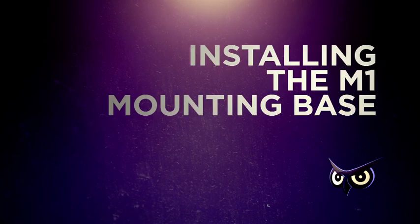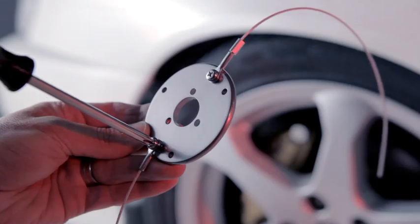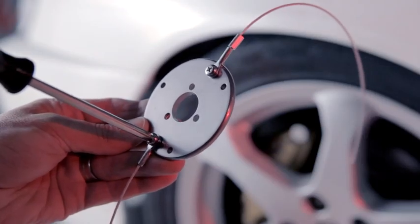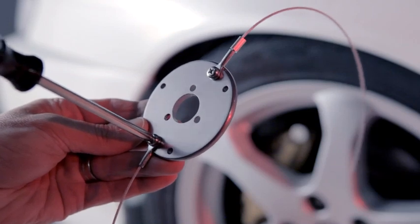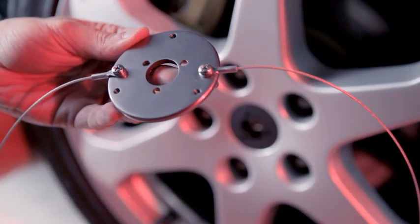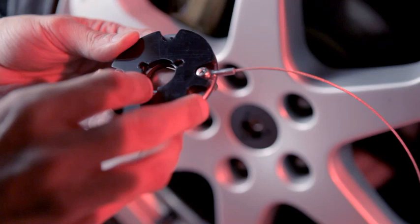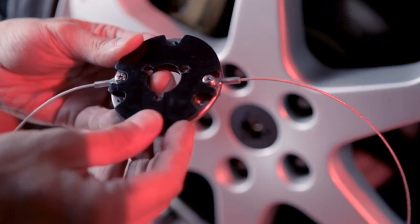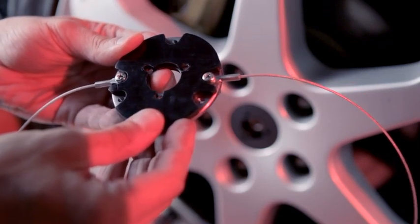Installing the M1 front mounting base. Secure the cords to the back of the mounting base. Place the appropriate spacers and/or taper washer underneath the mounting base if needed for optimal mounting position of the OWL unit on the wheel.